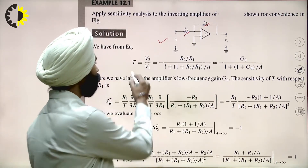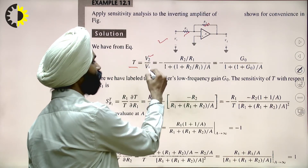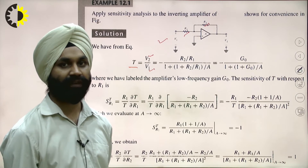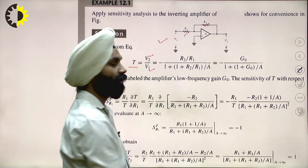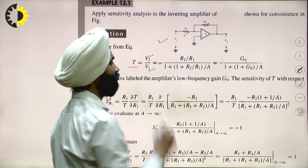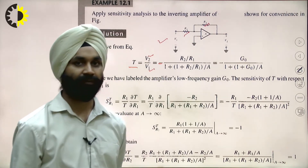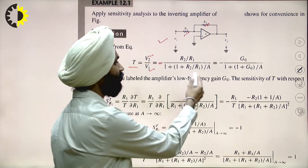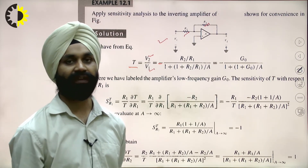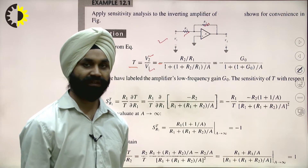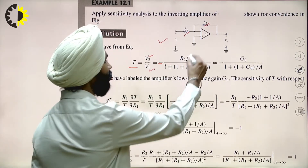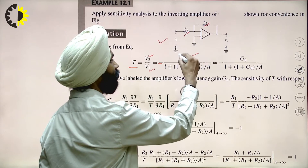To find out the transfer function, we take the ratio of V2 by V1. Since it is an inverting amplifier, it will be negative R2 by R1, divided by 1 plus R1R2 divided by the amplifier gain A. Now, if we see this transfer function, it is dependent upon three variables: R1, R2, and A.